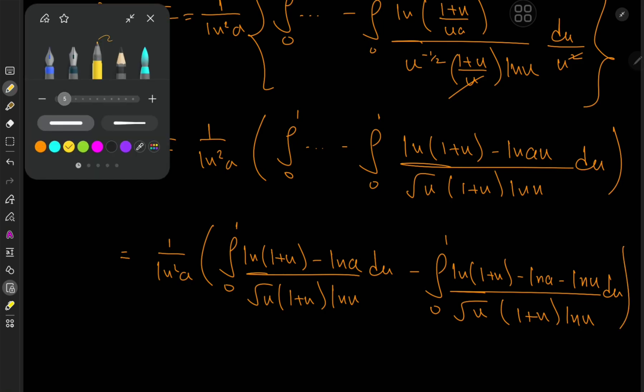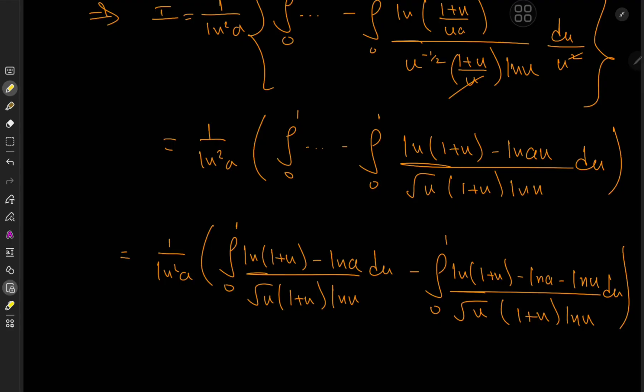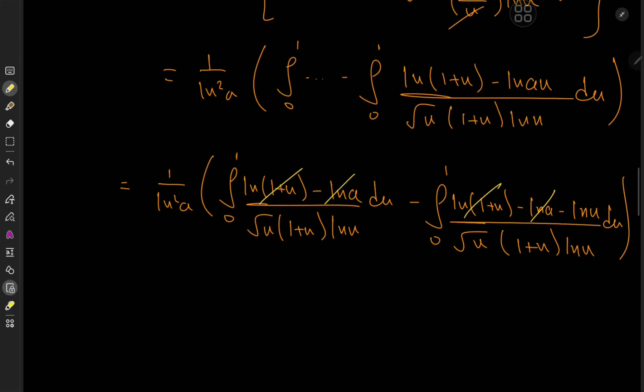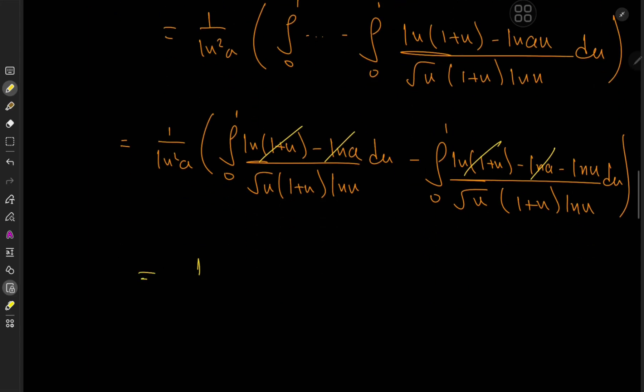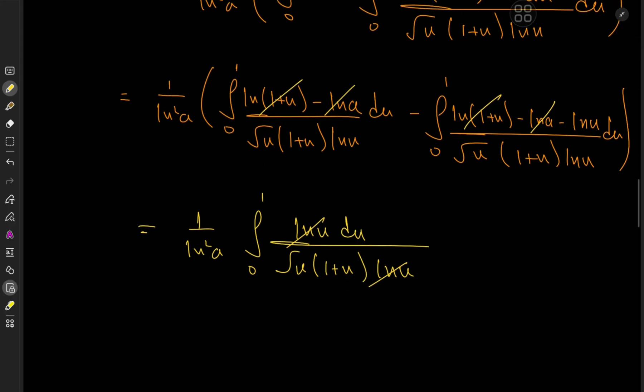So we have the cancellation I was talking about. We have log of (1 + u) canceling out, and we have negative log(a) canceling out with negative log(a). And we are simply left with 1 over log squared a times integral 0 to 1, log(u) du over root u times (1 + u) times log(u) du. And I did not have to write the du again. So the log terms cancel out, which was awesome, by the way. You have to admit that this was awesome.